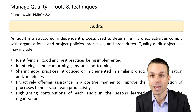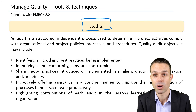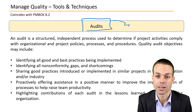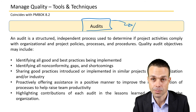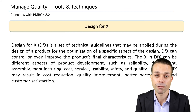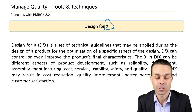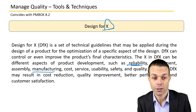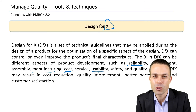Audits are a tool that looks at the process — how are we actually delivering this project, not necessarily the deliverables themselves. Audits are usually done by an external party who checks whether you're doing things correctly, meeting requirements, completing the right documents, and following applicable regulations. Design for X means deciding what characteristic we're designing for — reliability, manufacturing, cost, usability, or safety — and it can result in cost reduction, quality improvement, better performance, or customer satisfaction.